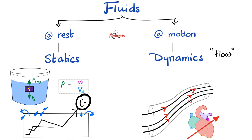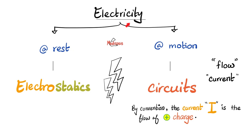When we talked about fluids, we talked about fluids at rest — statics — and fluids in motion, called dynamics. This is Archimedes winking at you after he discovered buoyancy. Same thing for electricity: we can study electricity at rest, called static electricity or electrostatics, or electricity in motion, called electric current in electric circuits. And this is what we're talking about today.